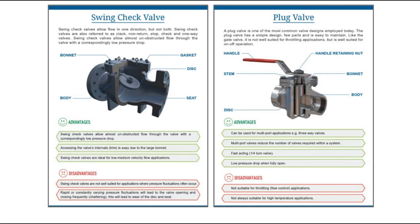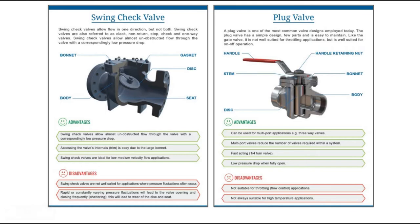The next valve types are swing check valve and plug valve. Swing check valves allow flow only in one direction. They are also referred to as clack valves, non-return valves, stop check valves, and one-way valves. Swing check valves allow almost unobstructed flow through the valve with a correspondingly low pressure drop. The different parts visible in the diagram include the disc, seat gasket, bonnet, and the body. Accessing the valve internals is easy due to the large bonnet, and swing check valves are ideal for low to medium velocity flow applications.